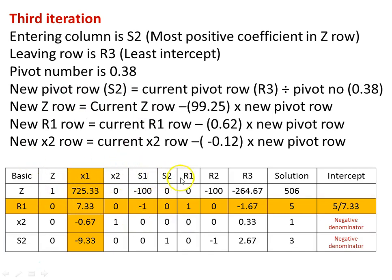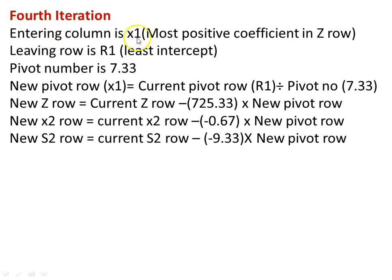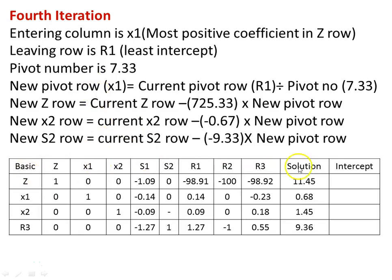Using these four equations, the new result is calculated. Looking at the updated table, x1 is now the entering variable because it has the most positive value. Two rows have negative denominators and are excluded. r1 is the leaving variable, and the pivot number is 7.33. New pivot row for x1 equals current r1 row divided by 7.33; new z-row equals current z-row minus 725.33 times new pivot row; new x2-row equals current x2-row minus (−0.67) times new pivot row; new s2-row equals current s2-row minus (−9.33) times new pivot row. The new result is calculated from these four equations.